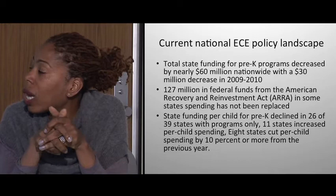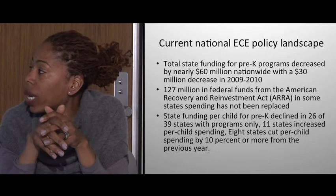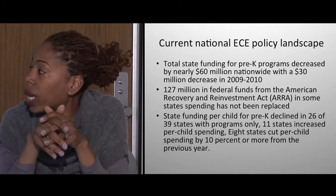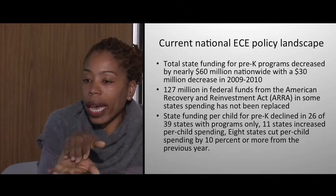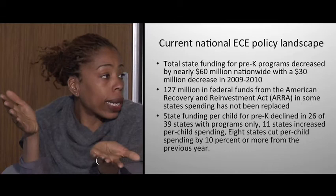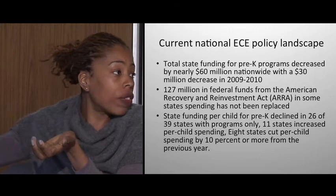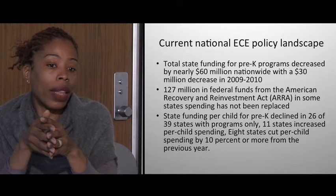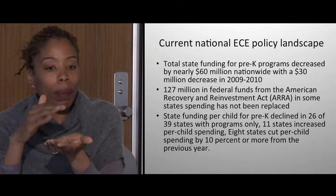According to NIEER's 2011 state report card, only 26 out of 39 states were able to maintain funding per child; 11 increased while 8 decreased their spending. States are broke, and those that have spent years investing heavily in early education are now seeing significant decreases in funding investments. They are trying to find alternate ways to bolster investments — hence the need for private funding from organizations like ours.